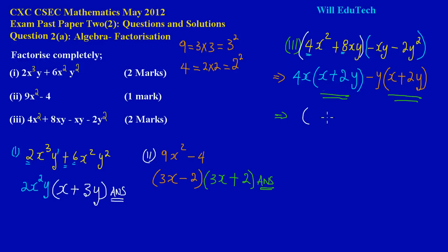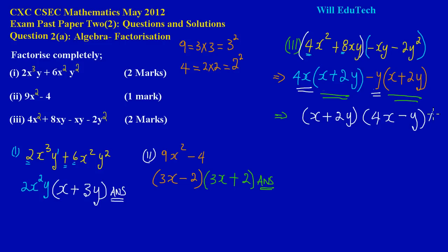To get your final answer, you simply write what's inside one of the matching brackets, then combine what's on the outside of both into another bracket. So over here I have positive 4x and negative y, giving the final answer (x + 2y)(4x − y). It's really that easy! If you have trouble with factorization by grouping, feel free to check out our playlist on factorization for more exam question types and practice.